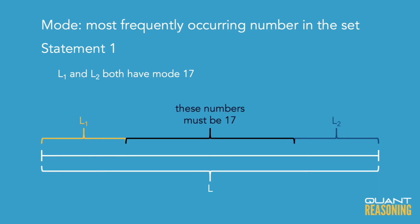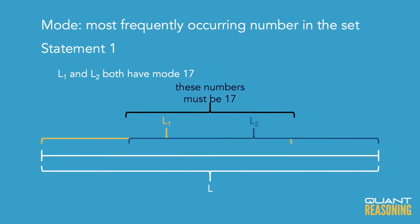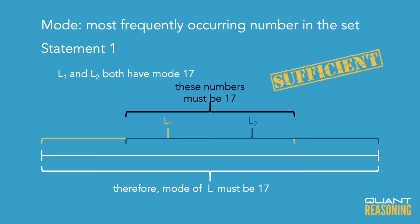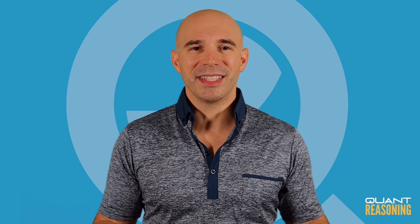So it turns out that no matter which scenario you imagine, given that the list is arranged in ascending order and 17 is the mode of the first several numbers and also of the last several numbers in the set, it has to be the mode of the entire set. Therefore, the correct answer here is A.